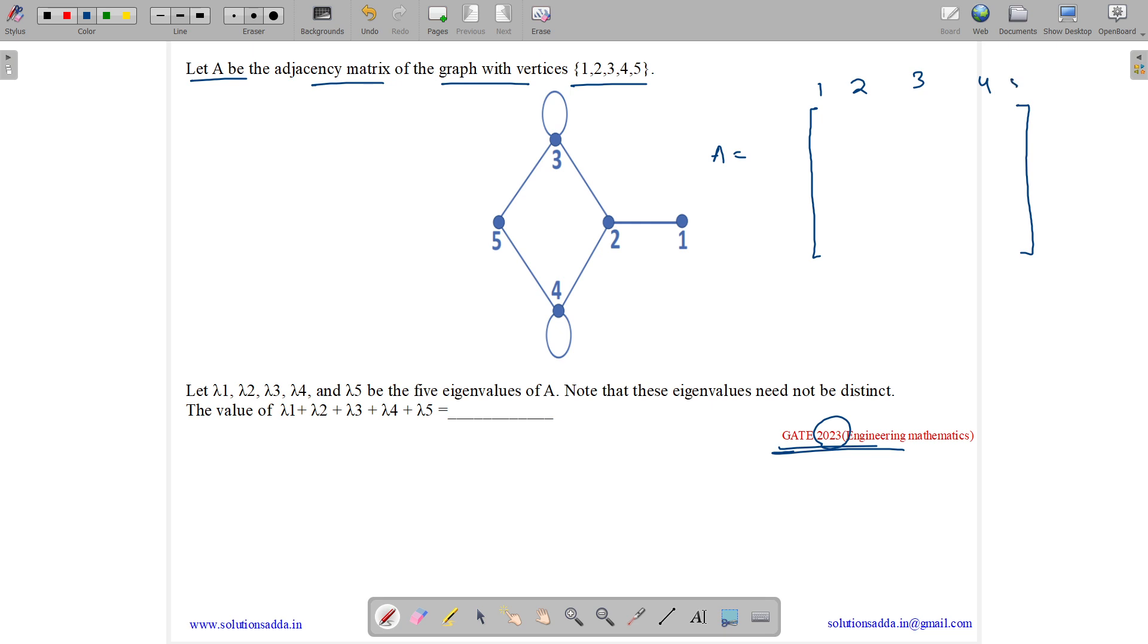So we have 1, 2, 3, 4, 5, and 1, 2, 3, 4, 5.